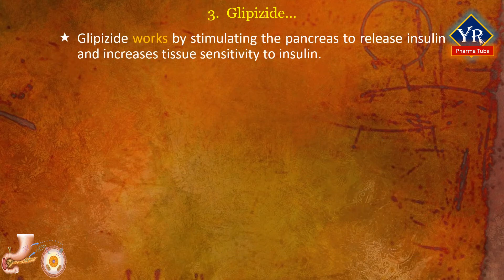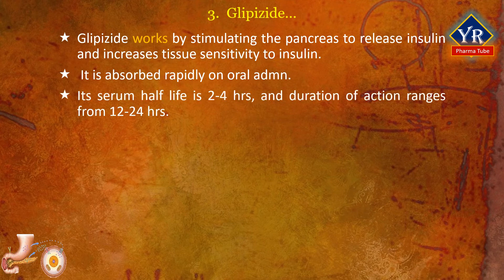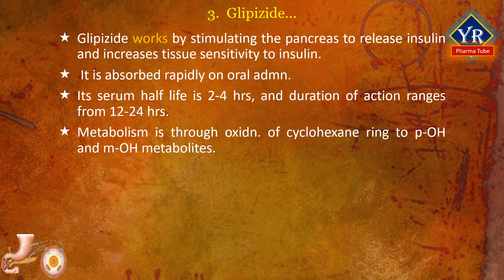Glipizide works by stimulating the pancreas to release insulin and increases tissue sensitivity to insulin. The drug is absorbed rapidly on oral administration. Its serum half-life is 2 to 4 hours and it has a hypoglycemic effect that ranges from 12 to 24 hours. Metabolism of glipizide is generally through oxidation of the cyclohexane ring to the para-hydroxy and meta-hydroxy metabolites. A minor metabolic route involves the N-acetyl derivative, which results from acetylation of the primary amine following hydrolysis of the amide system by amide enzymes.